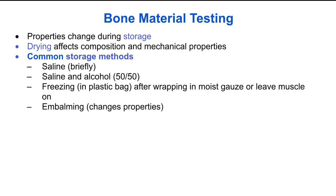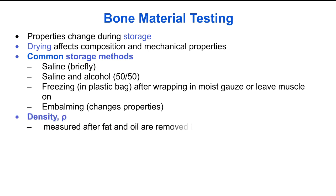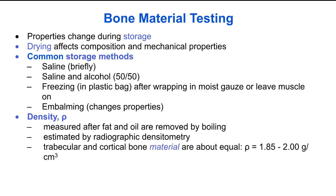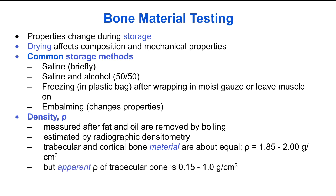Embalming or fixation of bone tissue significantly changes its mechanical properties. The density of bone is typically measured after fat and oil are removed by boiling. It can also be estimated by radiographic densitometry. The material density of trabecular and cortical bone is about the same, approximately 1.85 to 2 grams per centimeter cubed. However, the apparent density of trabecular bone, including the voids between the trabeculae, is much lower — only 0.15 to 1 gram per centimeter cubed — because trabecular bone is so spongy.